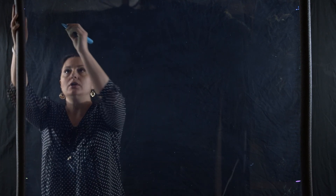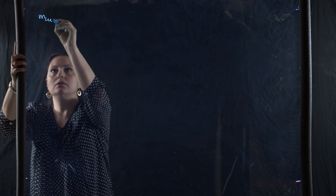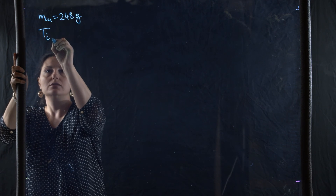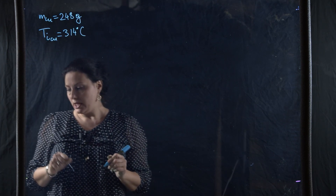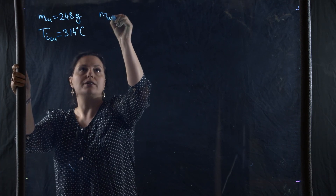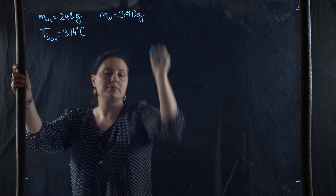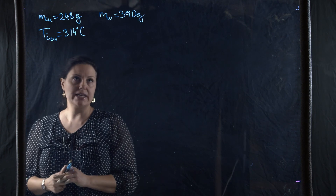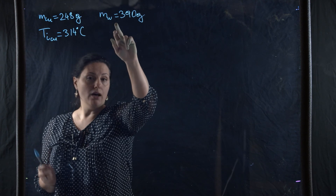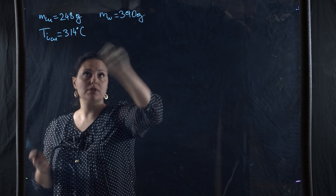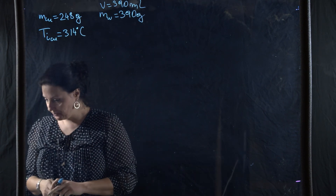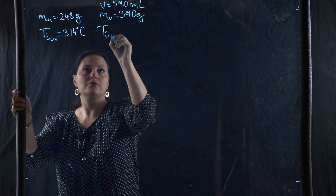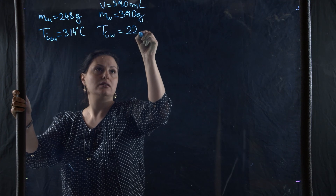A 248-gram piece of copper, initially at 314 degrees Celsius, is dropped into 390 milliliters of water. The mass of water is also 390 grams — assuming a density of 1 g/mL. Whenever you see a volume for water and no other information, assume it equals the same amount in grams. The initial temperature of the water is 22.6 degrees Celsius.